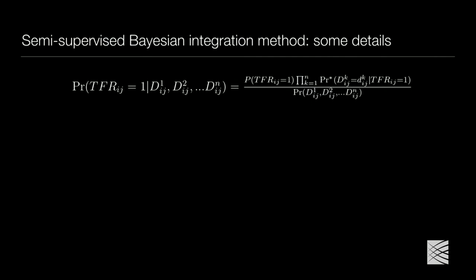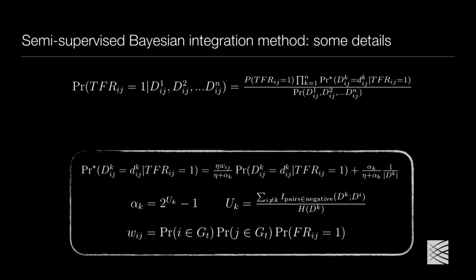Rather than the simple conditional probability equation, what we actually do is regularize the probabilities against each other based on mutual information between the data sets. We calculate U, the mutual information between data sets for general signal, and instead of taking the likelihood as-is, we use a regularized evidence score to take into account the conditional dependencies between data.